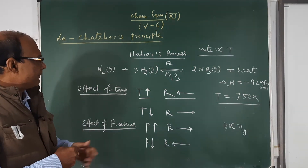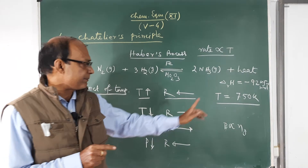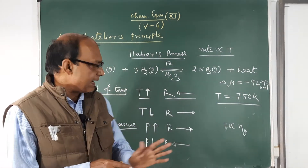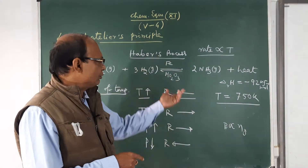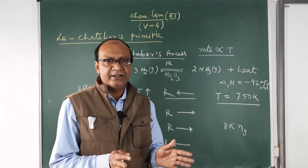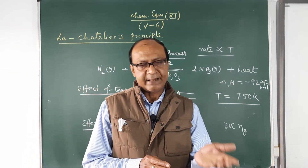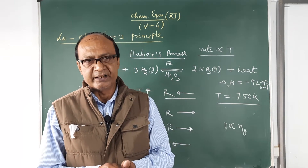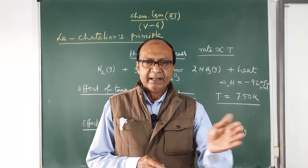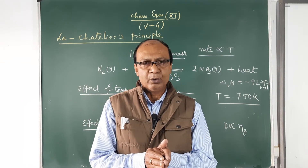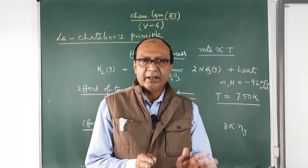In Haber's process, an optimum temperature must be maintained for a moderate rate of reaction, and high pressure must be applied to get more ammonia. Regarding the effect of catalyst: a catalyst cannot change the equilibrium position. A catalyst only helps attain equilibrium earlier — it helps reach equilibrium in less time. Whatever the equilibrium is for a particular reaction, the catalyst will help attain it faster.